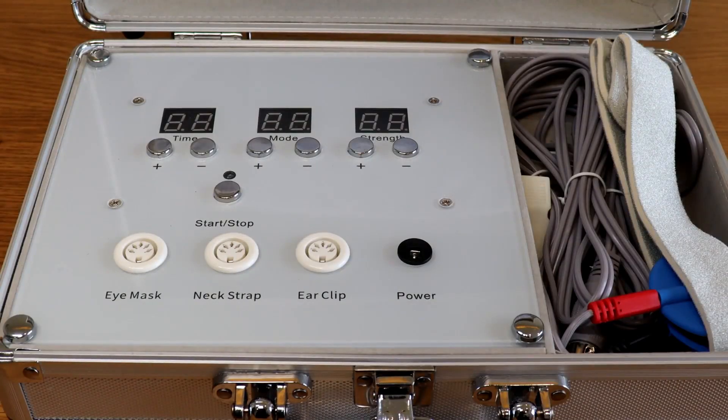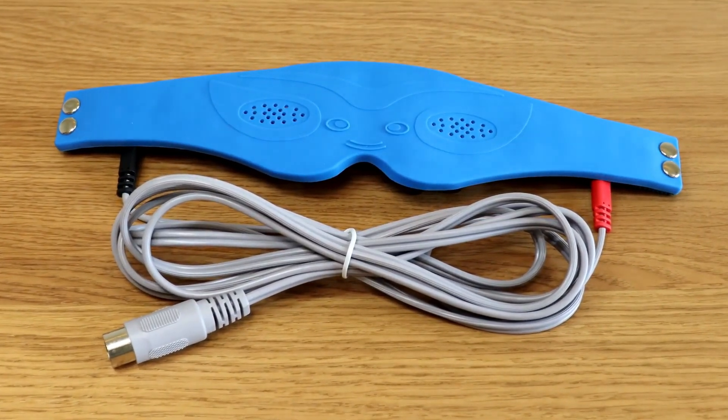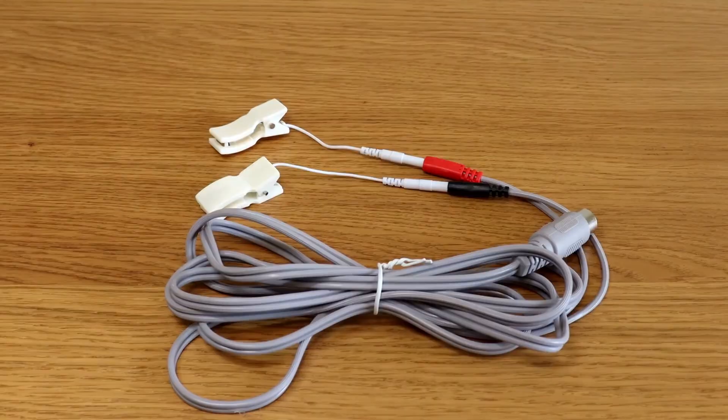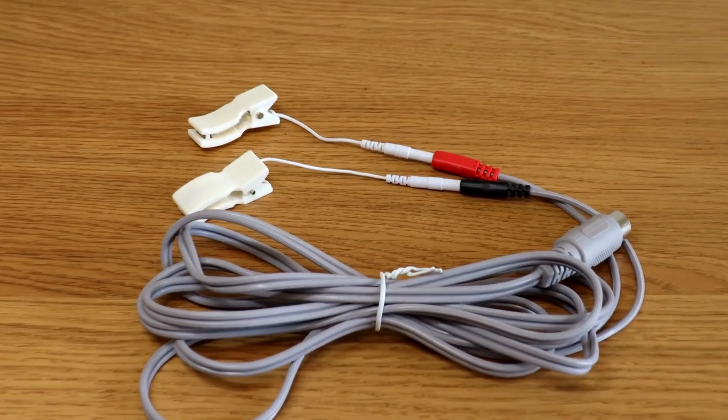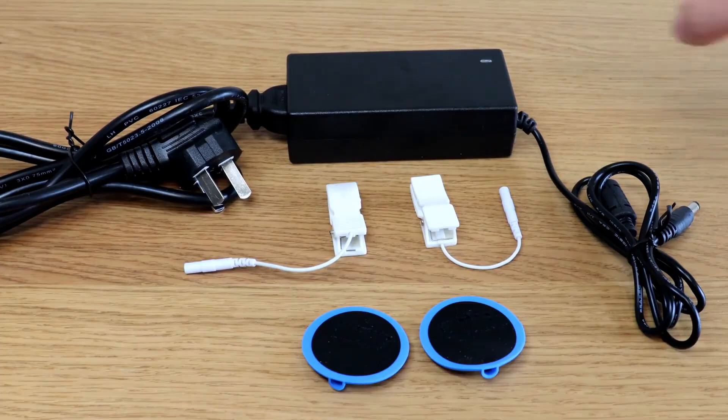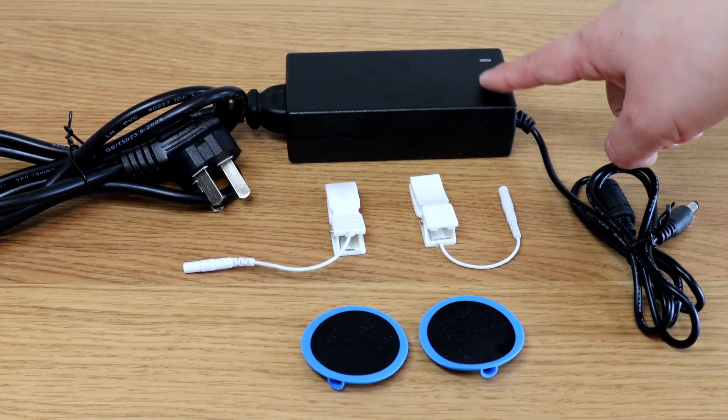One AC Stim, one eye mask, two electrode pads attached on a neck strap, two ear clips, a pair of rubber eye pads attached on the Velcro band, one power supply, and some backup parts.